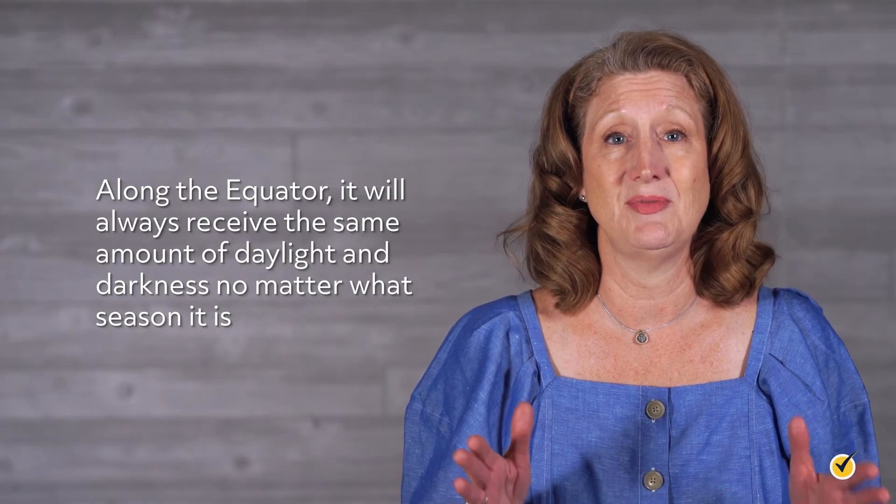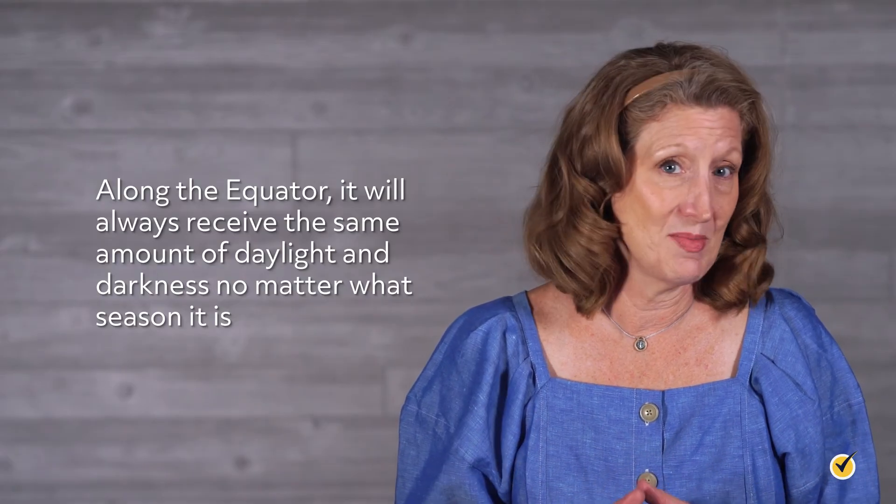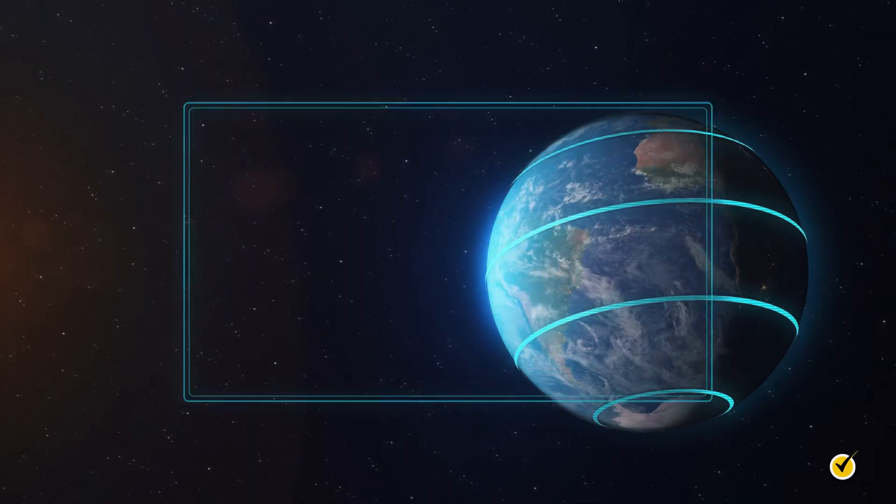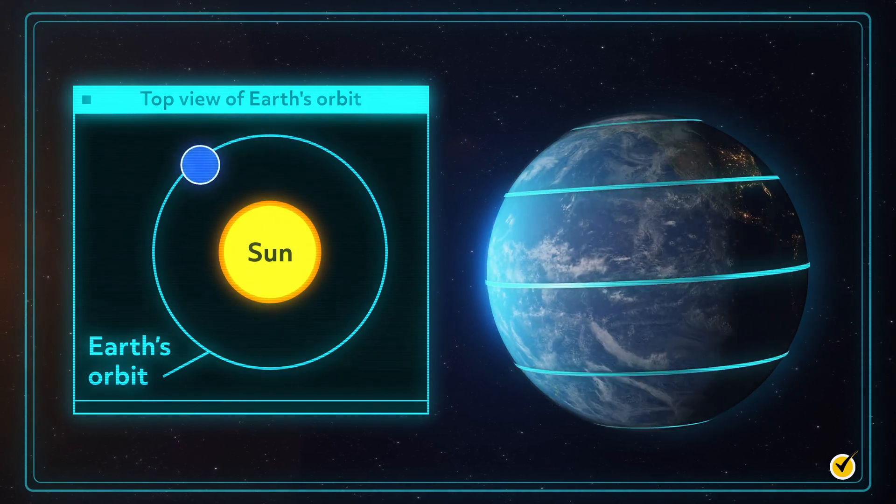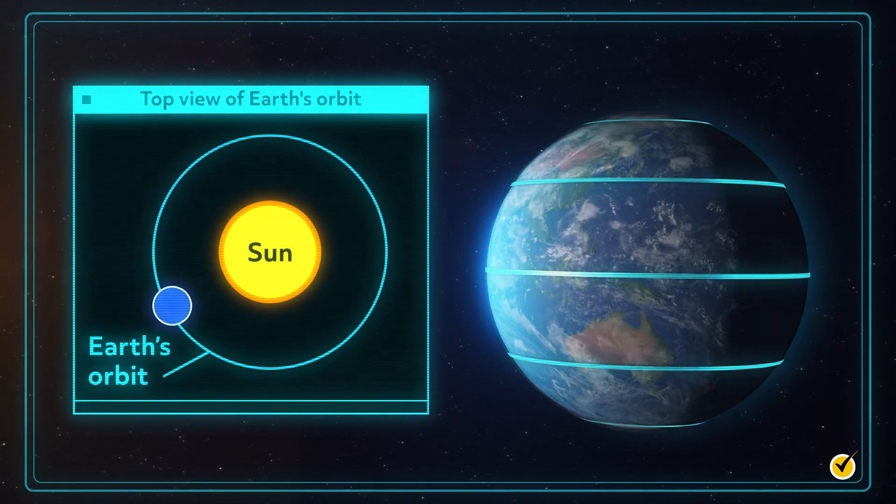One more thing to note about all these scenarios is that along the equator, it will always receive the same amount of daylight and darkness, no matter what season it is. This is because of the equator's central location and equal distances from the North and South Pole.